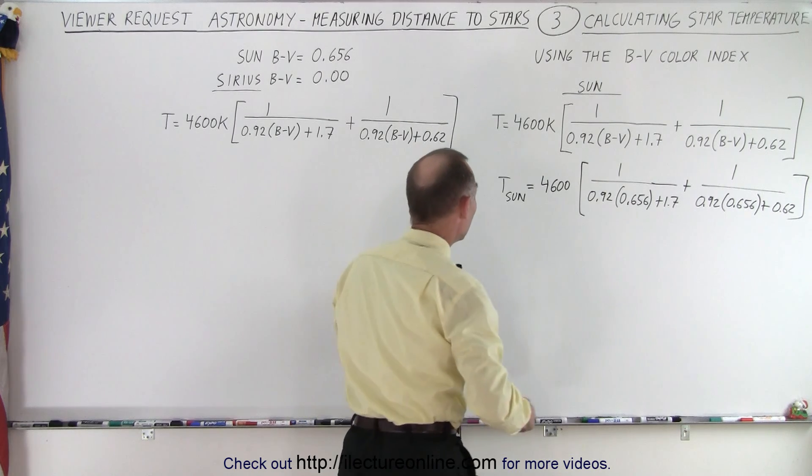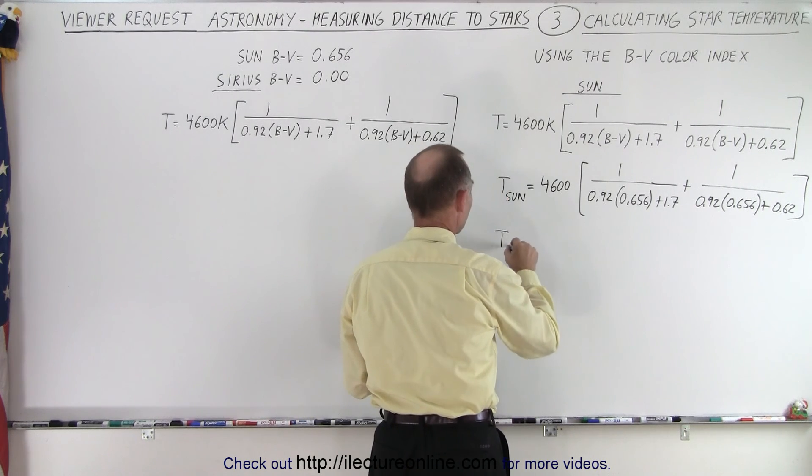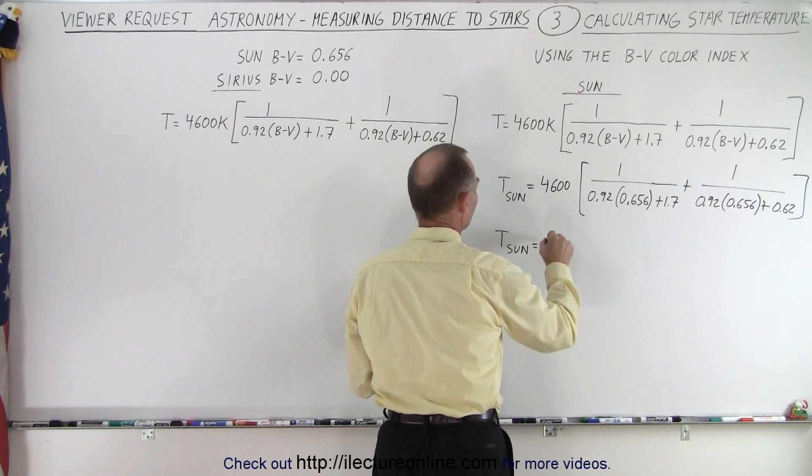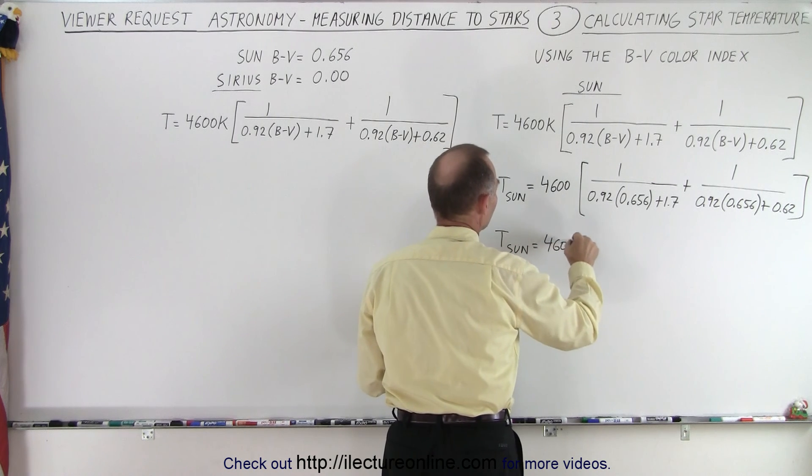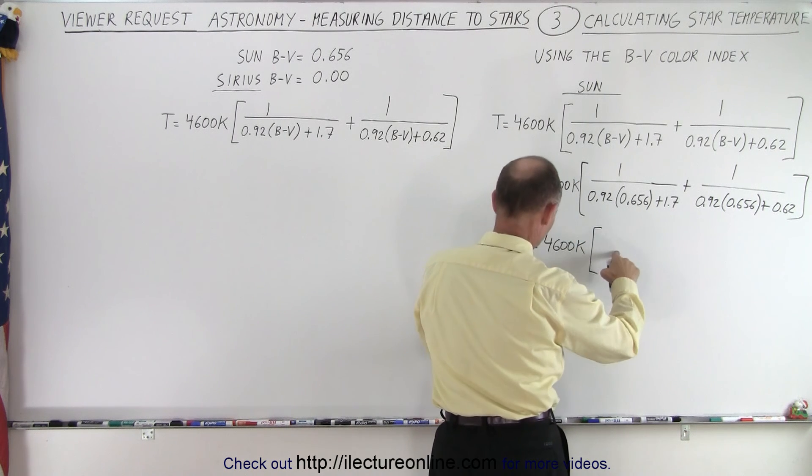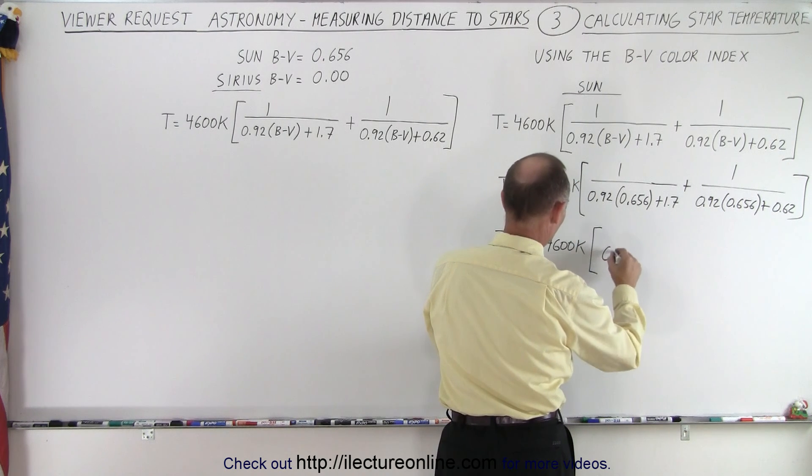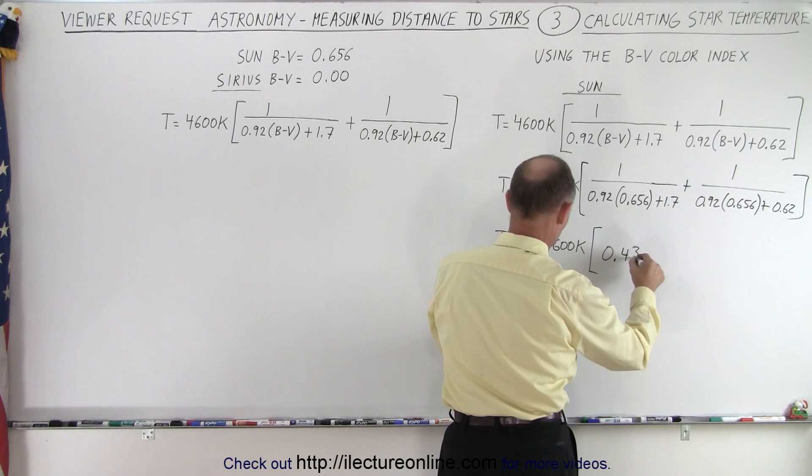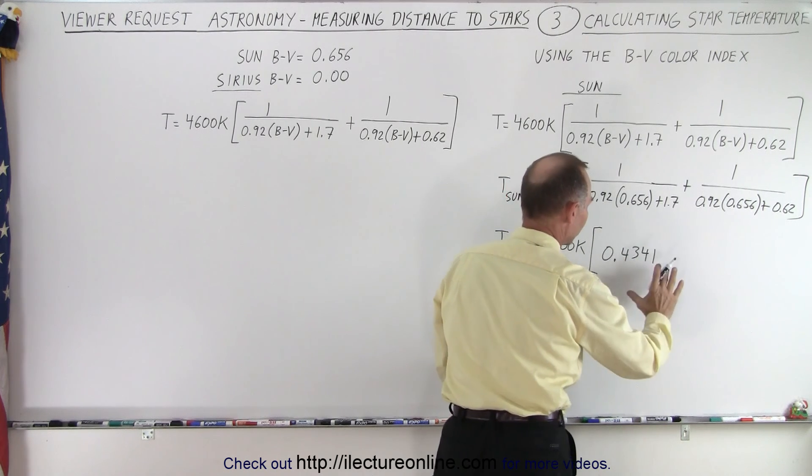So we get the temperature for the Sun is equal to 4600 Kelvin times, so the first fraction gives us 0.4341 out to four decimal places,